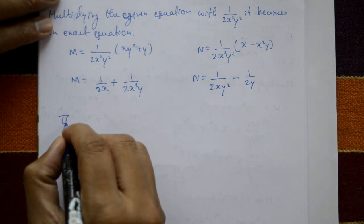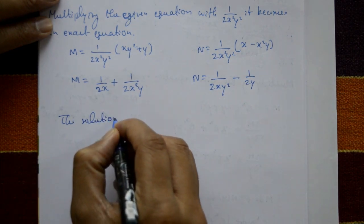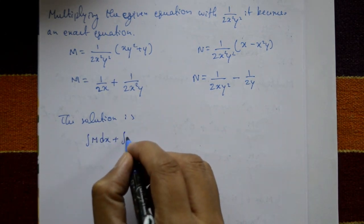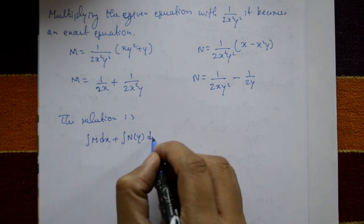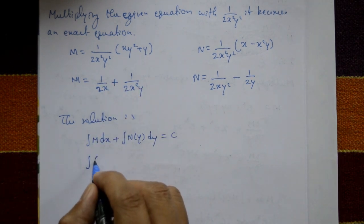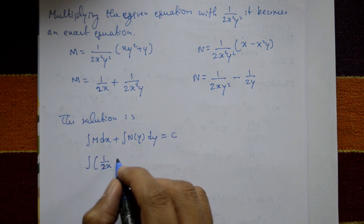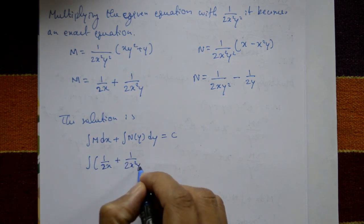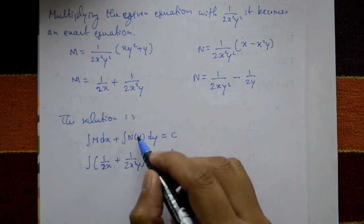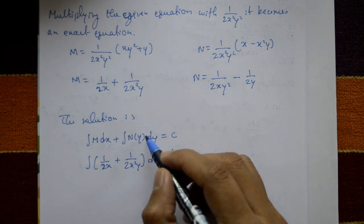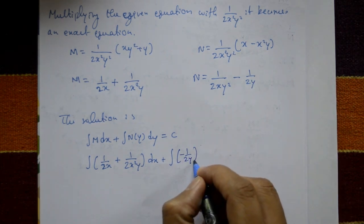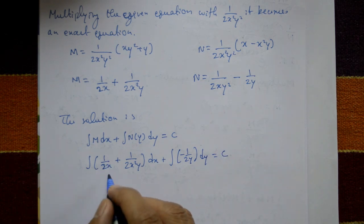Now the solution is: integration of M dx plus integration of N(y) dy equals C. Take integration of M: 1/(2x) plus 1/(2x²y) with respect to x, plus integration of N(y) — terms not containing x. The second term, minus 1/(2y), is considered with respect to y equals C.